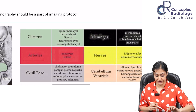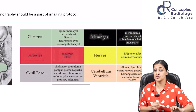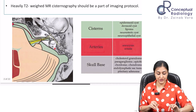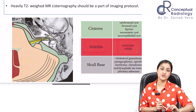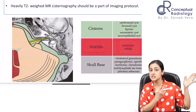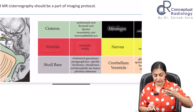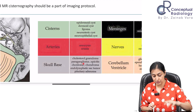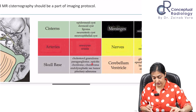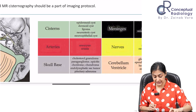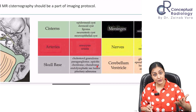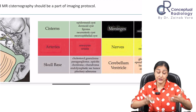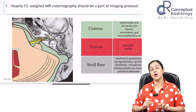From vessels, we can have basilar artery aneurysm and vessel ectasia. The petrous apex is a very important skull base area here — all skull base lesions can occur, for example cholesterol granuloma, paraganglioma, petrous apex inflammation, chordoma, chondroma, chondrosarcoma, endolymphatic sac tumor, and pituitary adenoma extending from below.